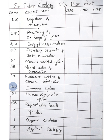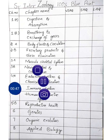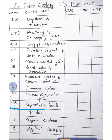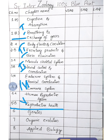Second Intermediate Zoology Telangana State has a total of eight units. The first five units each have two chapters: 1A and 1B, 2A and 2B, 3A and 3B, 4A and 4B, 5A and 5B. Units 6, 7, and 8 cover Genetics, Organic Evolution, and Applied Biology. From these eight units, let us see what long answer, short answer, and very short answer questions can be asked.